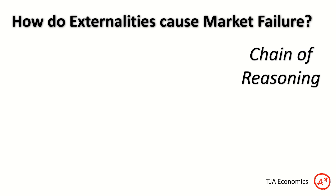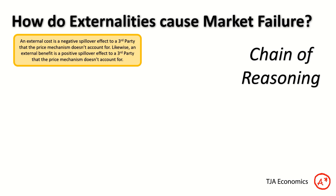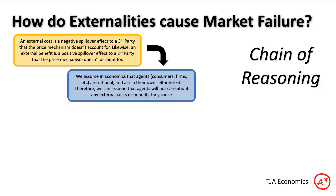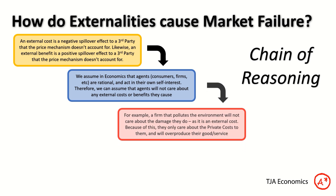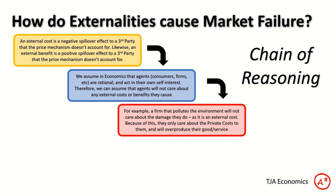Let's put that into a chain of reasoning. An external cost is a negative spillover effect to a third party that the price mechanism does not account for. Likewise, an external benefit is a positive spillover effect the price mechanism doesn't account for. We assume in economics that all agents — consumers, firms — are rational and act in their own self-interest. Therefore, agents will not care about any external costs or benefits they cause. A firm that pollutes the environment will not care about the damage they do — that's an external cost. Because of this, they only care about private costs, and as a result, they will overproduce their good or service.